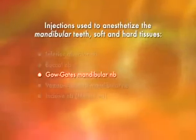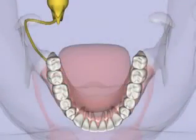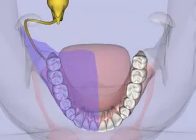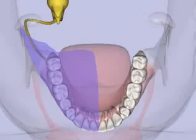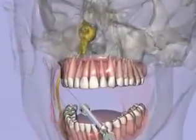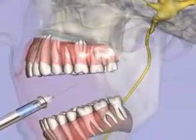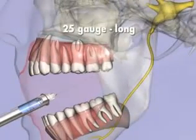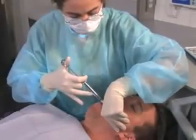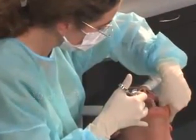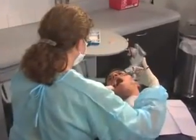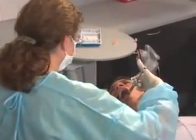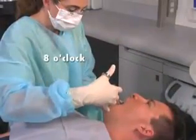The Gow-Gates mandibular block provides pulpal anesthesia to the mandibular teeth, the buccal soft tissue and bone, the anterior two-thirds of the tongue and the floor of the oral cavity, the lingual soft tissue and periosteum, as well as the skin of the zygoma, the posterior portion of the cheek, and the temporal regions. A 25-gauge long needle is recommended. For the left block, the right-handed operator sits at 10 o'clock facing the same direction as the patient; for the right block, at 8 o'clock facing the patient.